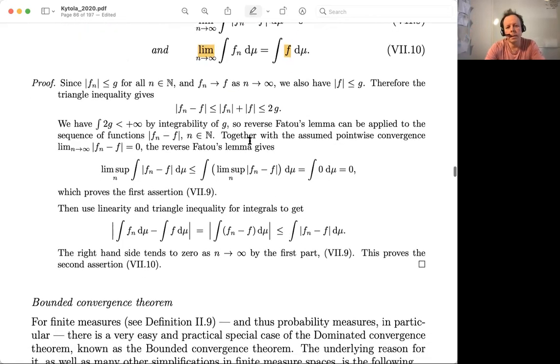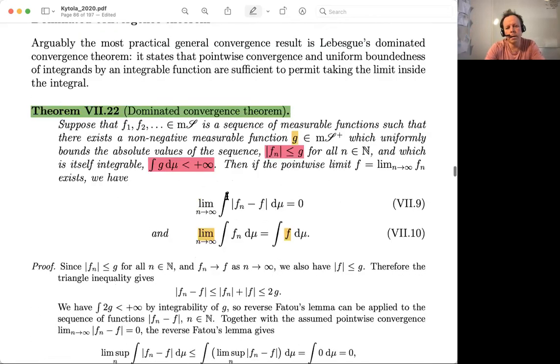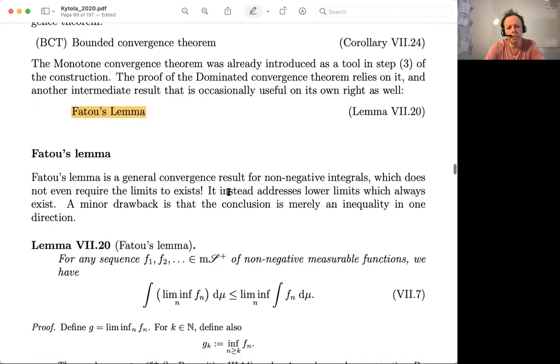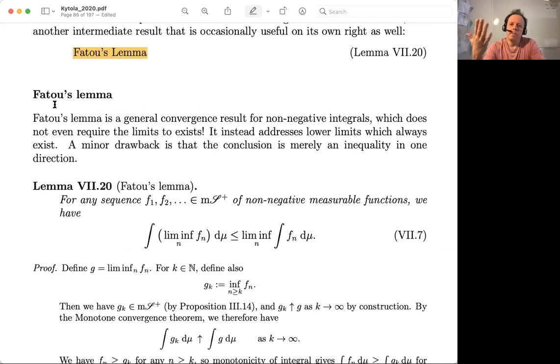The proof is not complicated. It's based on Fatou's lemma and then these previous two pages. So you could think Fatou is kind of one step of the proof in a way.